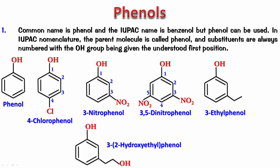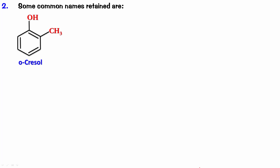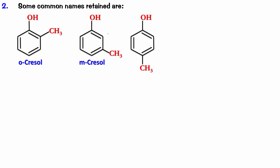For some compounds, their common names are retained as IUPAC names, so it's important to remember these. From the IUPAC version, 2-methylphenol has the common name orthocresol — ortho means no carbon between the two substituents. 3-methylphenol is metacresol, where there is one carbon between them. And 4-methylphenol is para-cresol, where there are two carbons between the two substituents.